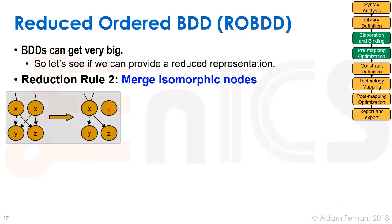Our second reduction rule is to merge isomorphic nodes. If we have two nodes at the same level — both representing variable x — and both have their zero-arc going to the same node y and their one-arc going to the same node z, then these two representations of x behave identically. We merge them: erase one, redirect the incoming arc to the remaining one, and delete the redundant arcs. That's called merging isomorphic nodes.